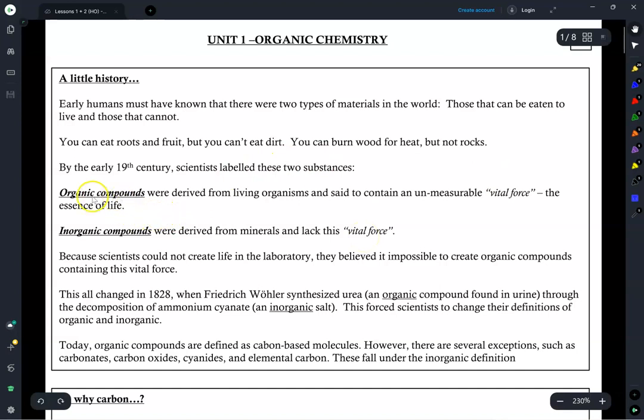This distinction between organic and inorganic compounds came to an end in 1828 when Friedrich Wohler synthesized urea, an organic compound found in urine. Keep in mind, synthesizing urea in and of itself, not a big deal. I mean, I synthesized urea at least six times a day. But how Friedrich Wohler was able to synthesize urea through the decomposition of ammonium cyanate, an inorganic salt. This forced scientists to change their definitions of organic versus inorganic, because now he was able to create an organic compound without an organism. He was able to create that organic compound through the use of inorganic substances.